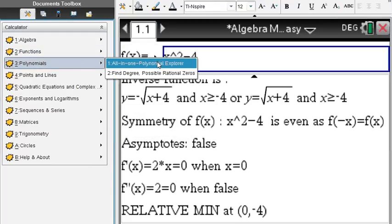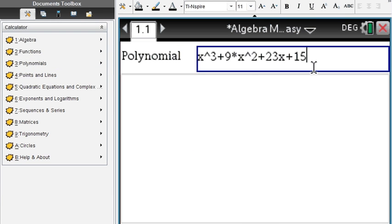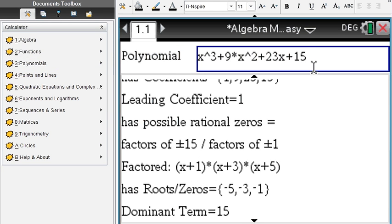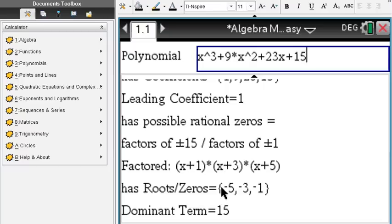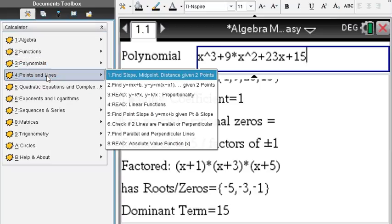Polynomials: you enter your polynomial right here and everything about the polynomial is found for you - the degree, the coefficients, the possible rational zeros, the actual zeros and the dominant term, anything you would ever need to know in your algebra class.